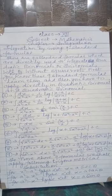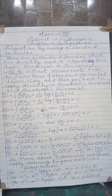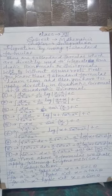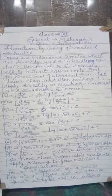In the substitution method, we have already defined how to apply it. For these questions, you have to use the following substitutions as per the terms obtained in the expression. You will have either an expression in the form of x square minus a square, x square plus a square, or a square minus x square, with or without square roots.